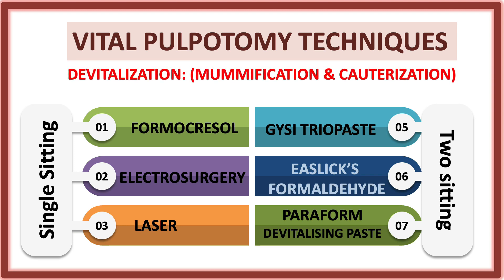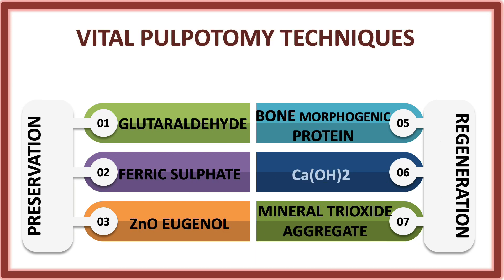Under devitalization, we have two types: single-sitting and two-sitting. In single sitting, pulpotomy is completed in one visit. In two sitting, in the first sitting we place a paste and in the second sitting we complete the pulpotomy. Under single sitting: formocresol pulpotomy, electrosurgery pulpotomy, and laser. Under two sitting: glycerio paste, azelaic formaldehyde, and paraform devitalizing paste.